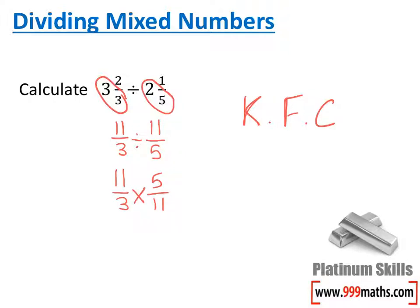When we multiply fractions, we multiply the numerators and the denominators. So, I'll end up with 55 over 33.